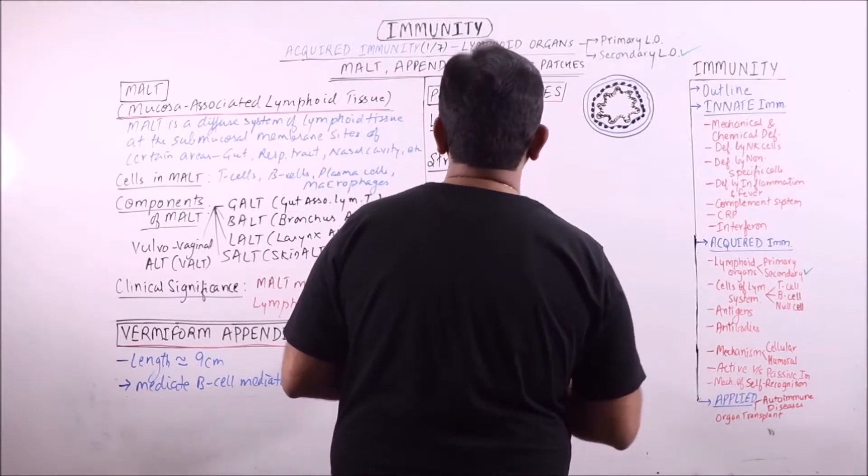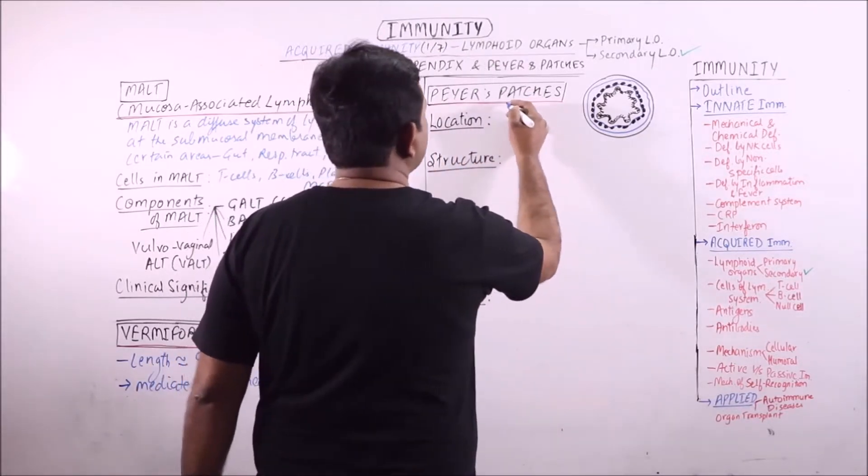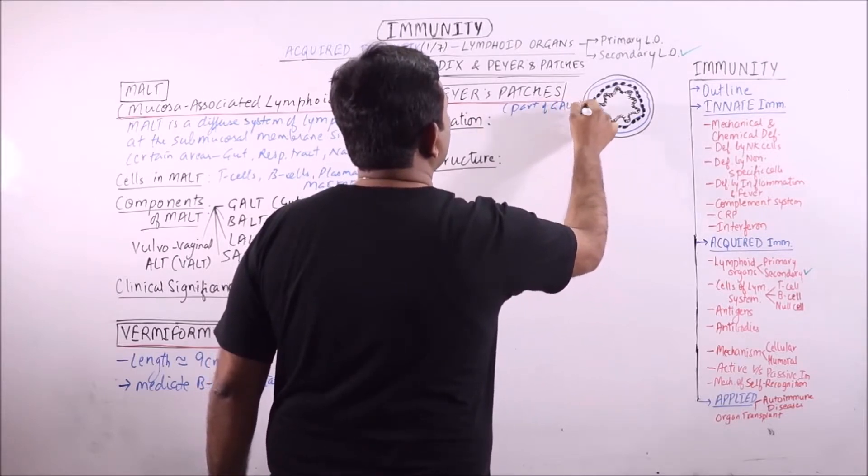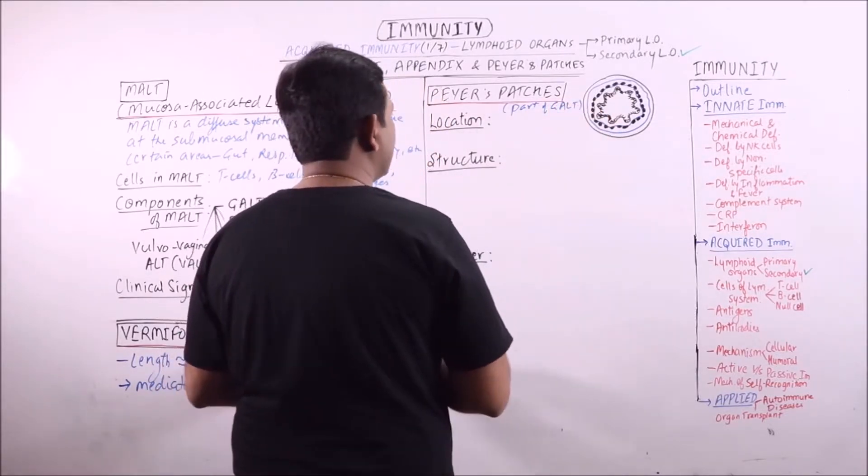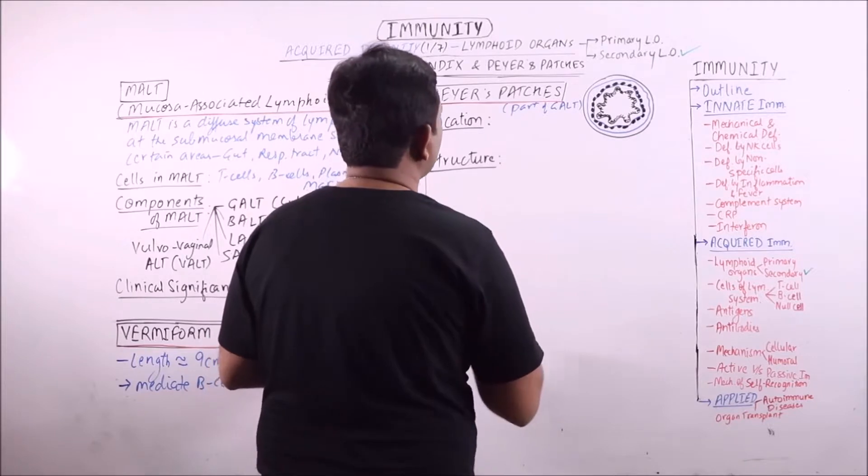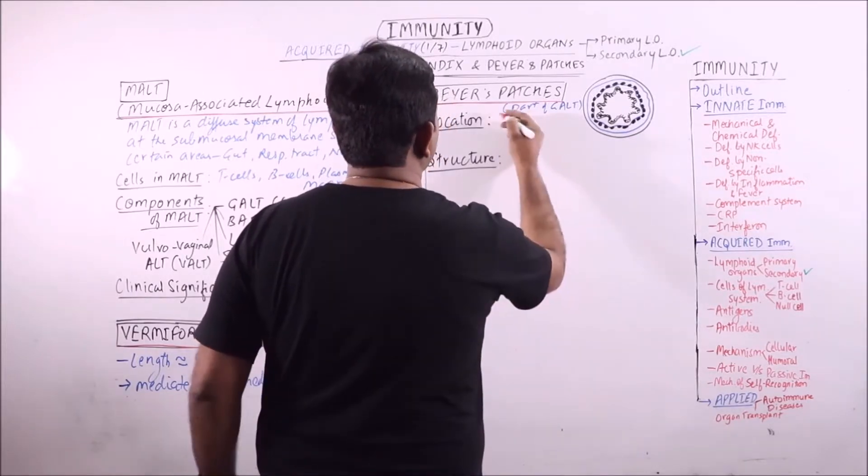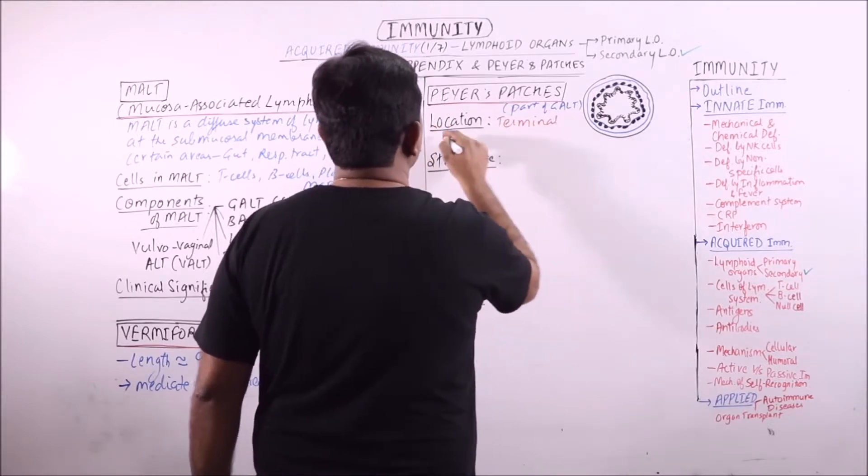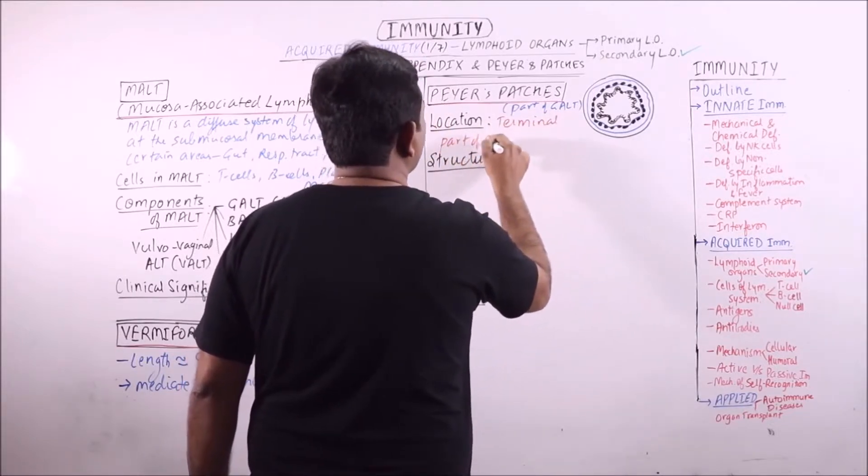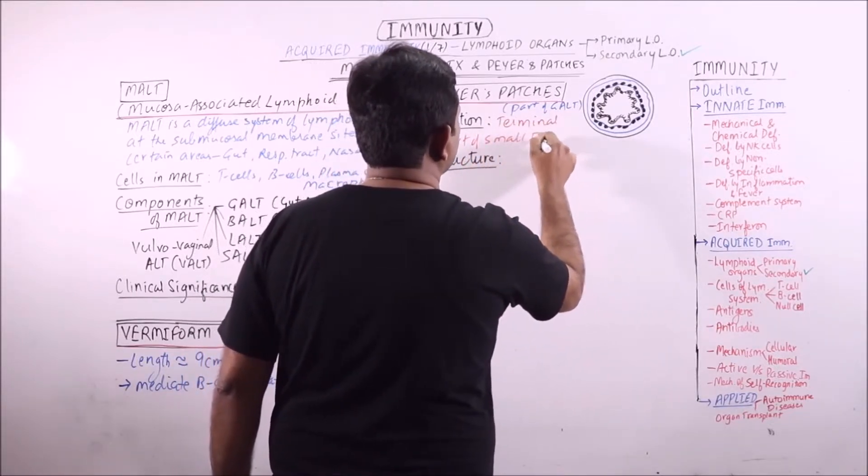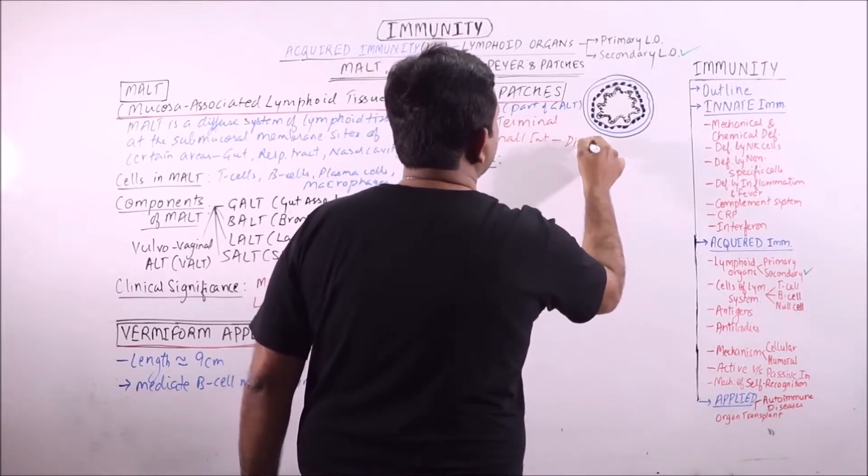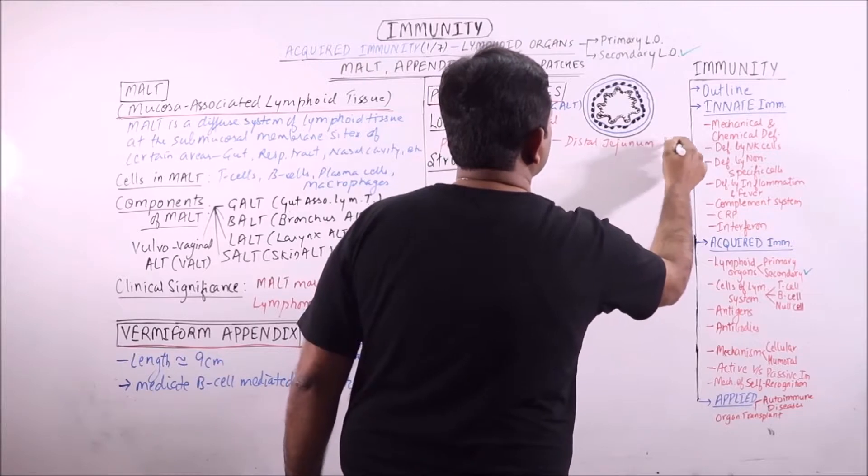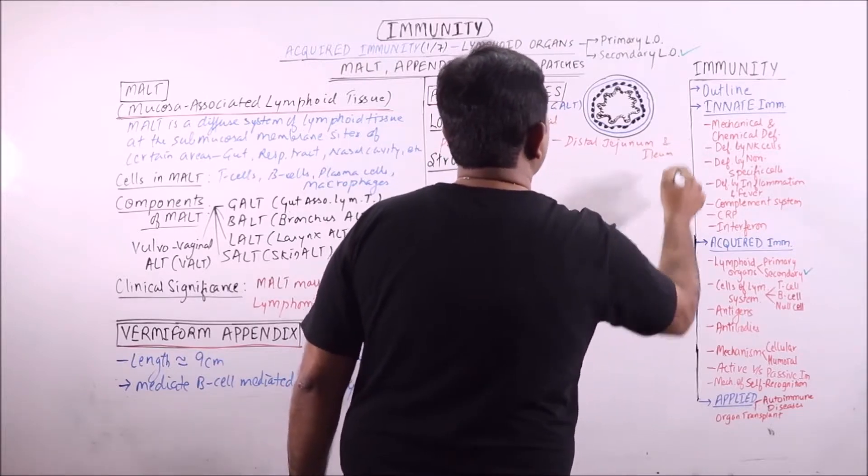Now Peyer's patches. Peyer's patches are part of GALT, that is gut-associated lymphoid tissue. Now what is the location? Location is the terminal part of small intestine, that is distal jejunum and ileum.